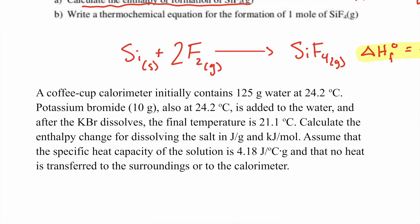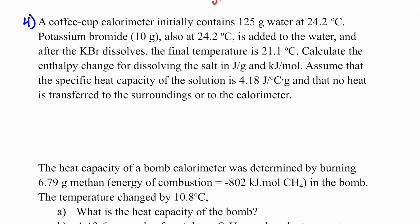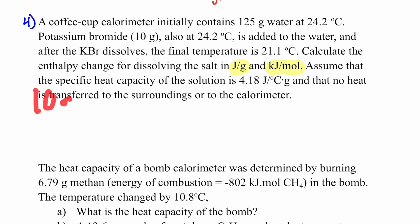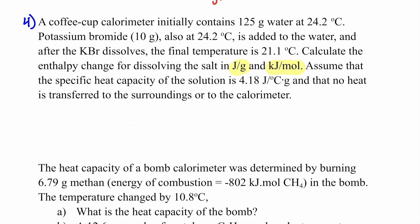Number four: a coffee cup calorimeter contains 125 grams of water at 24.2°C. 10 grams of KBr at the same temperature is added; after dissolving, the final temperature is 21.1°C. Calculate the enthalpy change for dissolving in joules per gram and kilojoules per mole. Specific heat capacity is 4.18 J/g·°C; no heat is lost to the calorimeter.